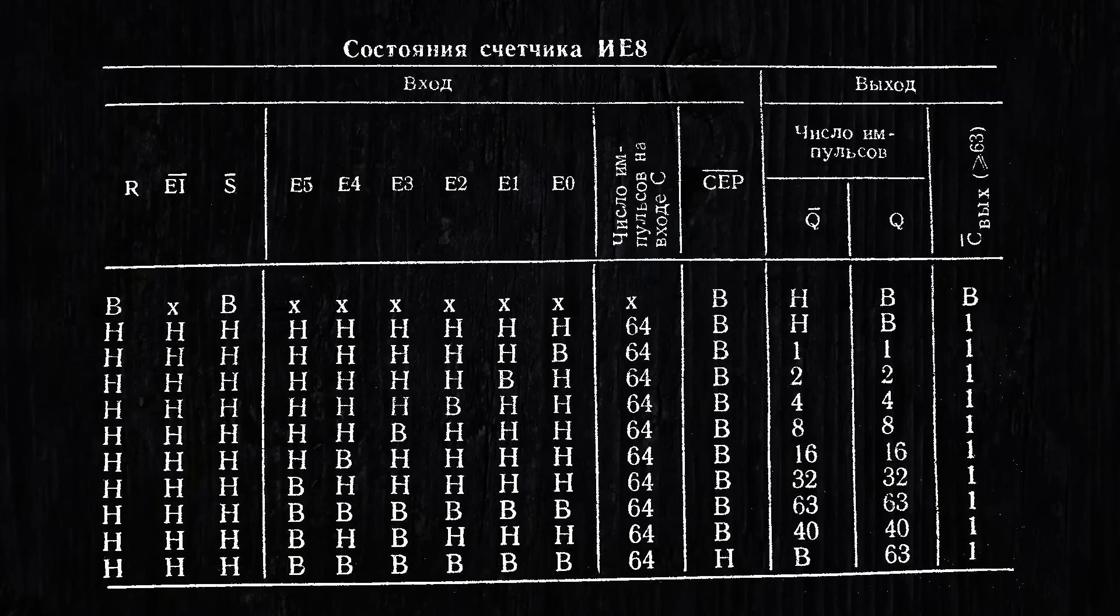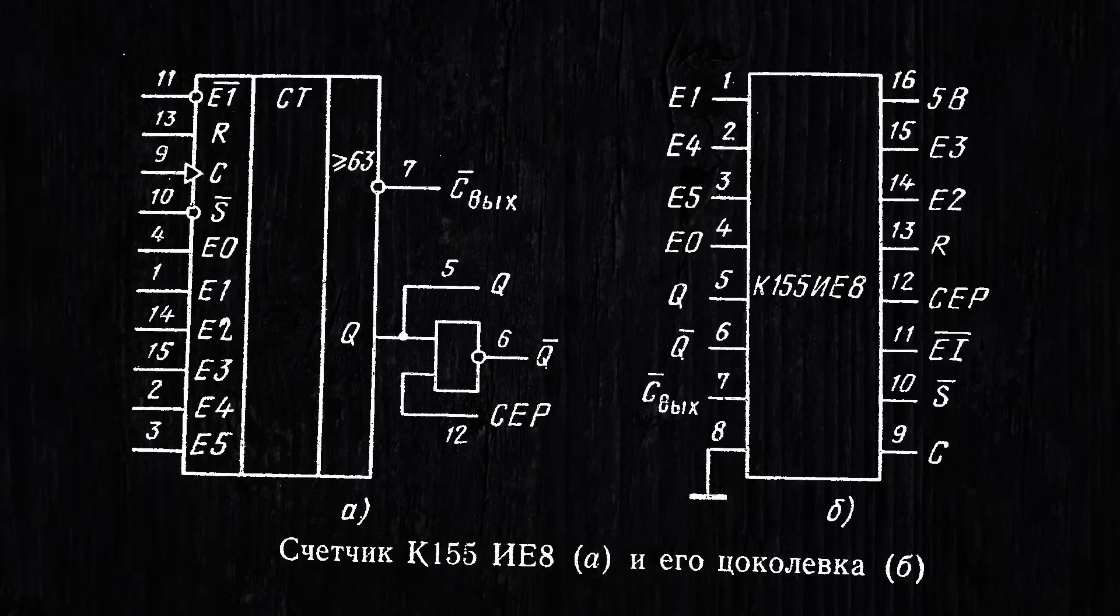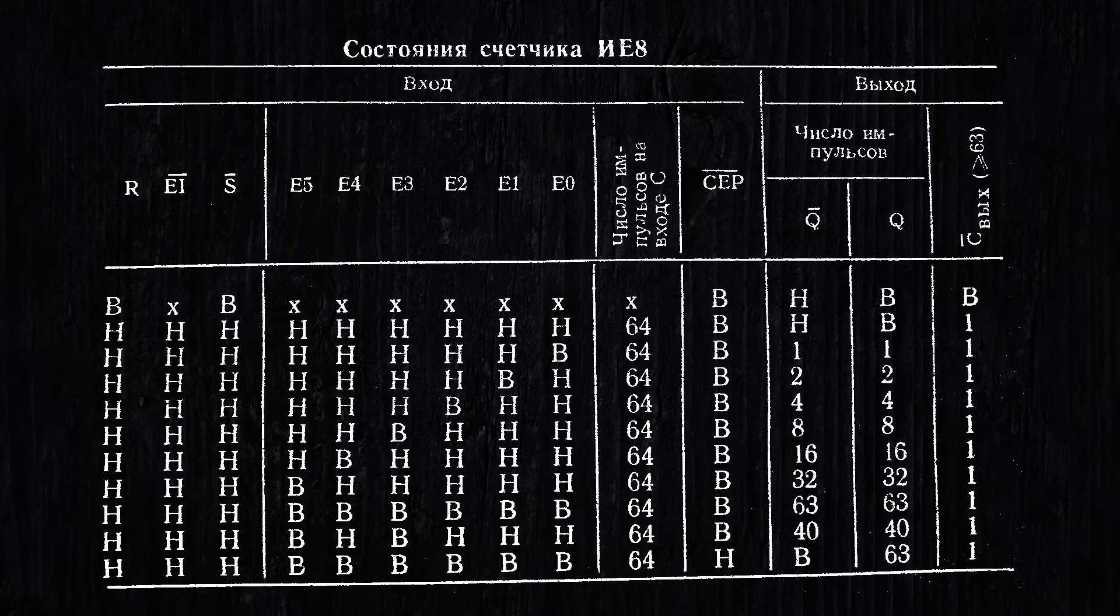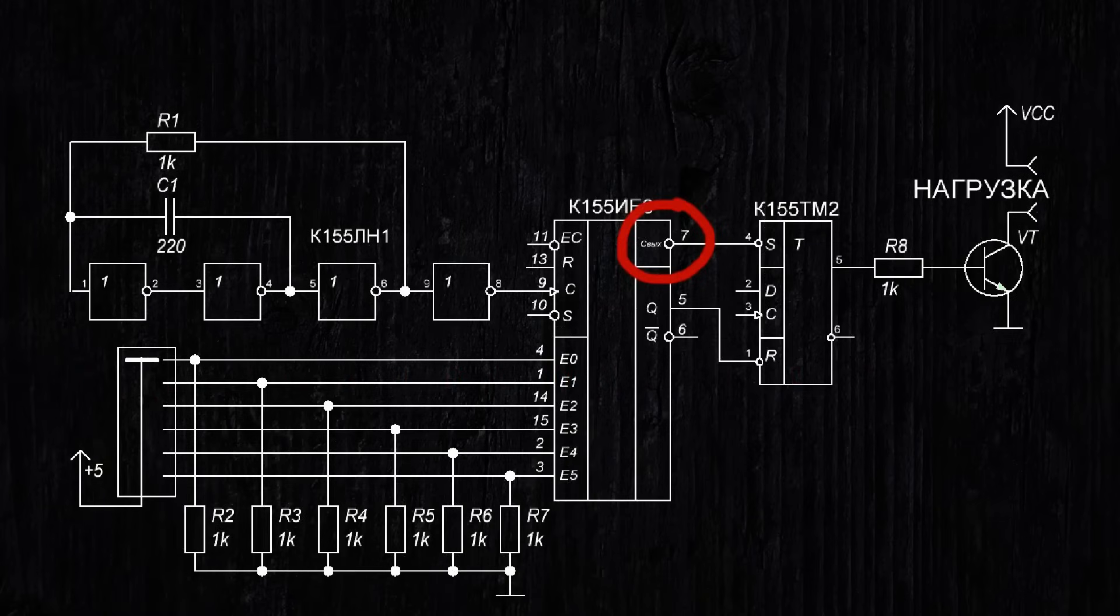This counter has six inputs that set the division ratio of the clock frequency from 1 to 64. That is, let's say, a logical 1 is applied to input E1, and a logical 0 to all other inputs E. Then, for 64 clock cycles of the signal at input C, only two cycles will appear at output Q. The frequency will be divided by 32. At the same time, when the counter counts to the last value, a signal will appear at the carry output.